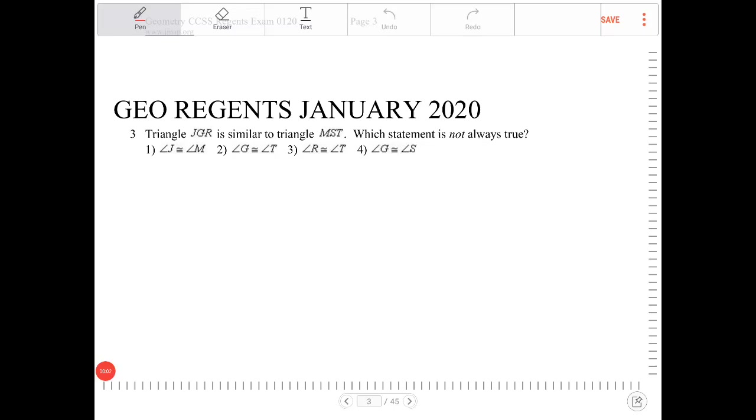Triangle JGR is similar to triangle MST, which statement is not always true. Okay, so JGR is similar to triangle MST.